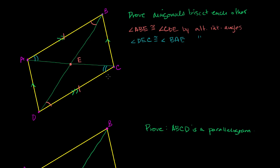We have two sets of corresponding angles that are congruent, a side in between that's congruent, and then another set of corresponding angles that are congruent. So we know that triangle ABE is congruent to triangle CDE by angle-side-angle congruency.